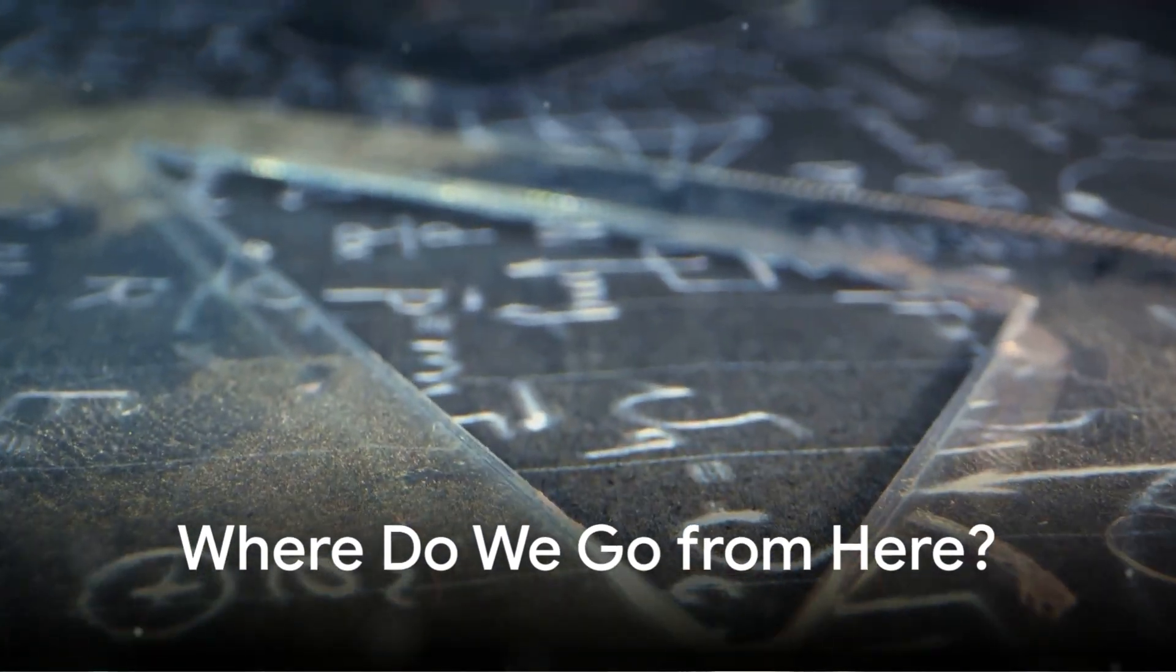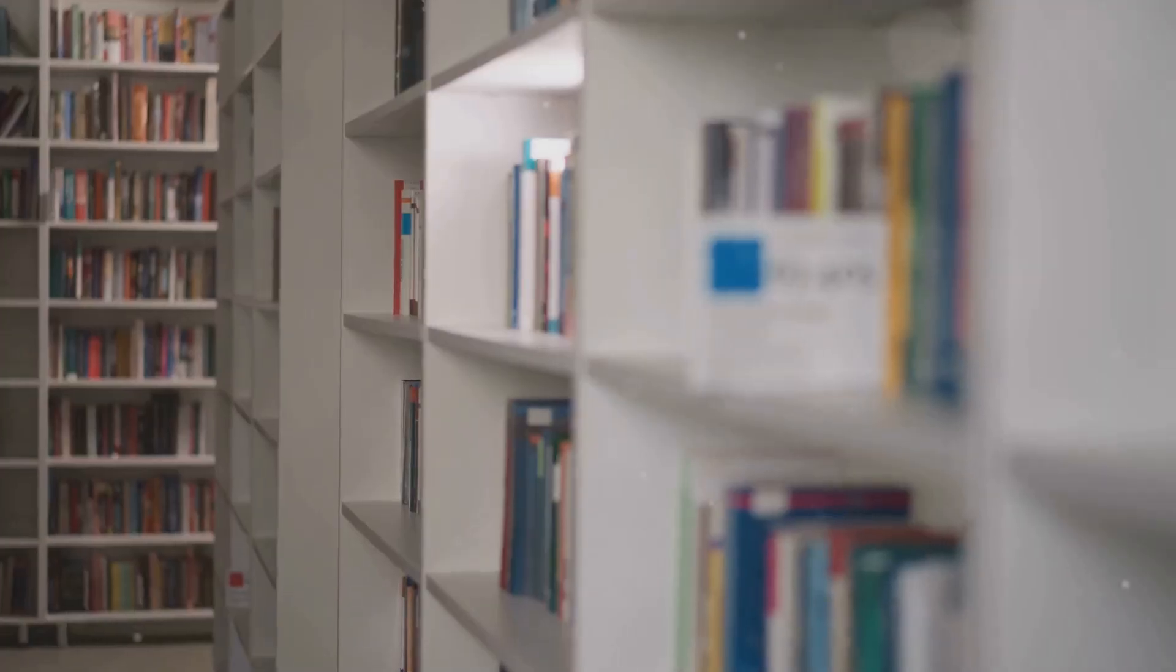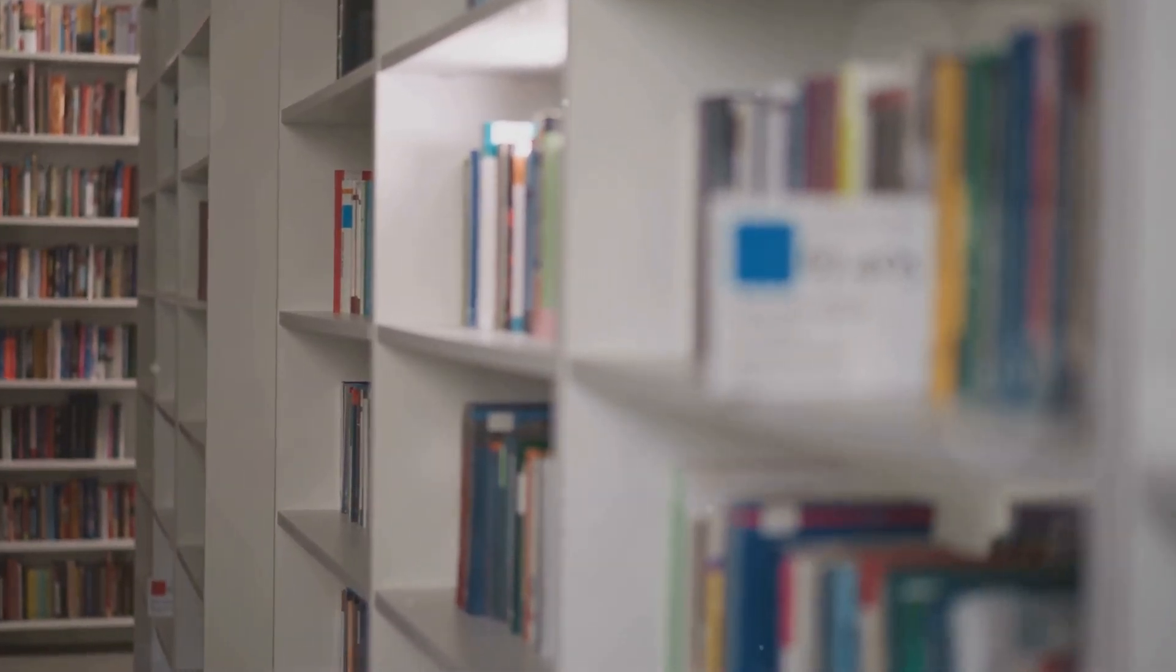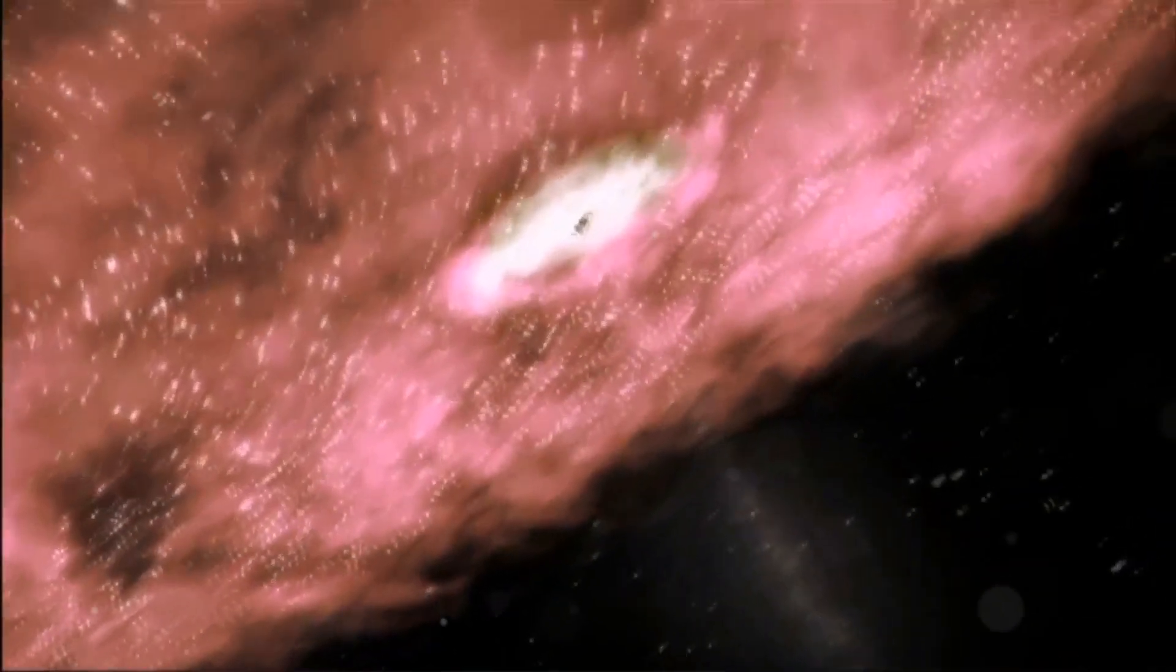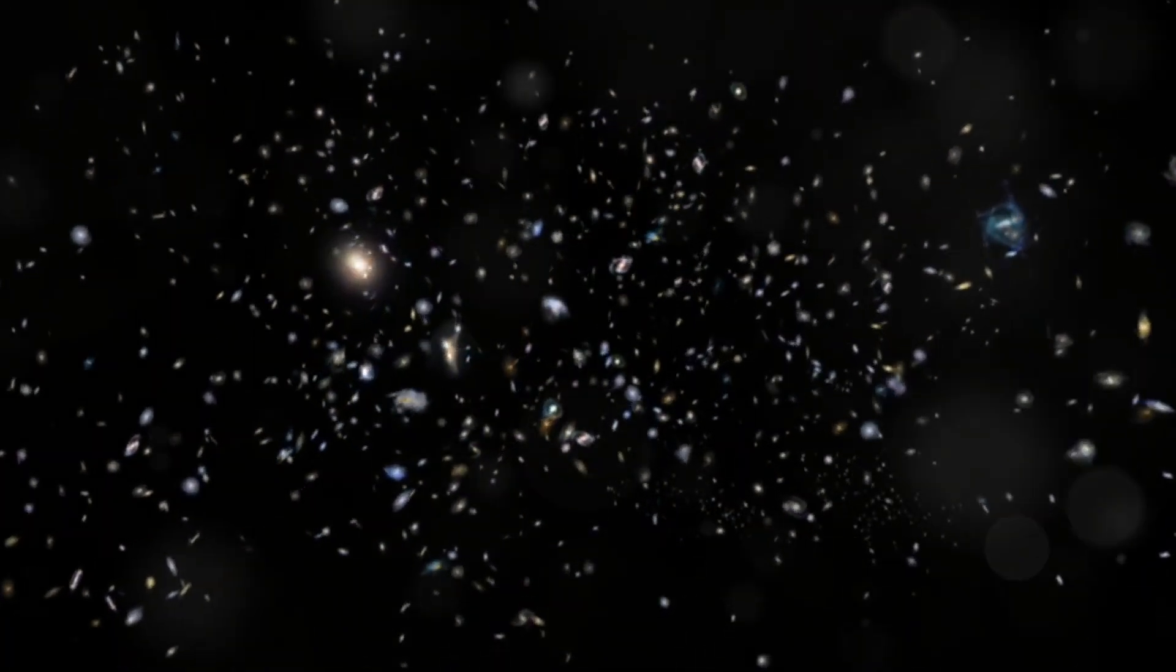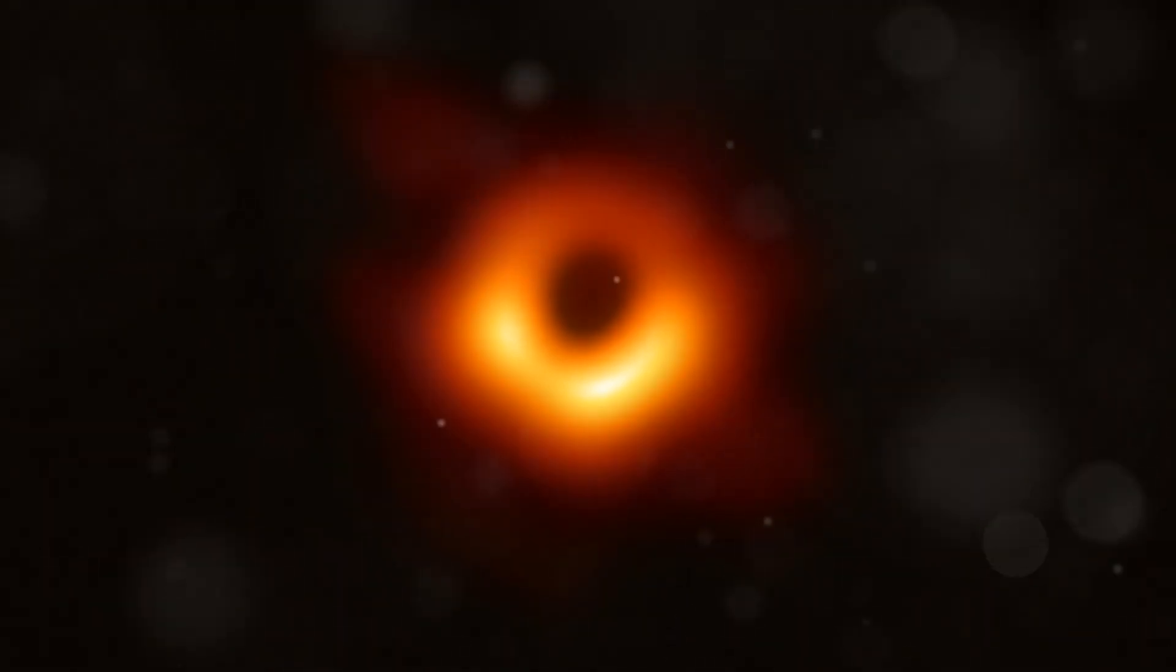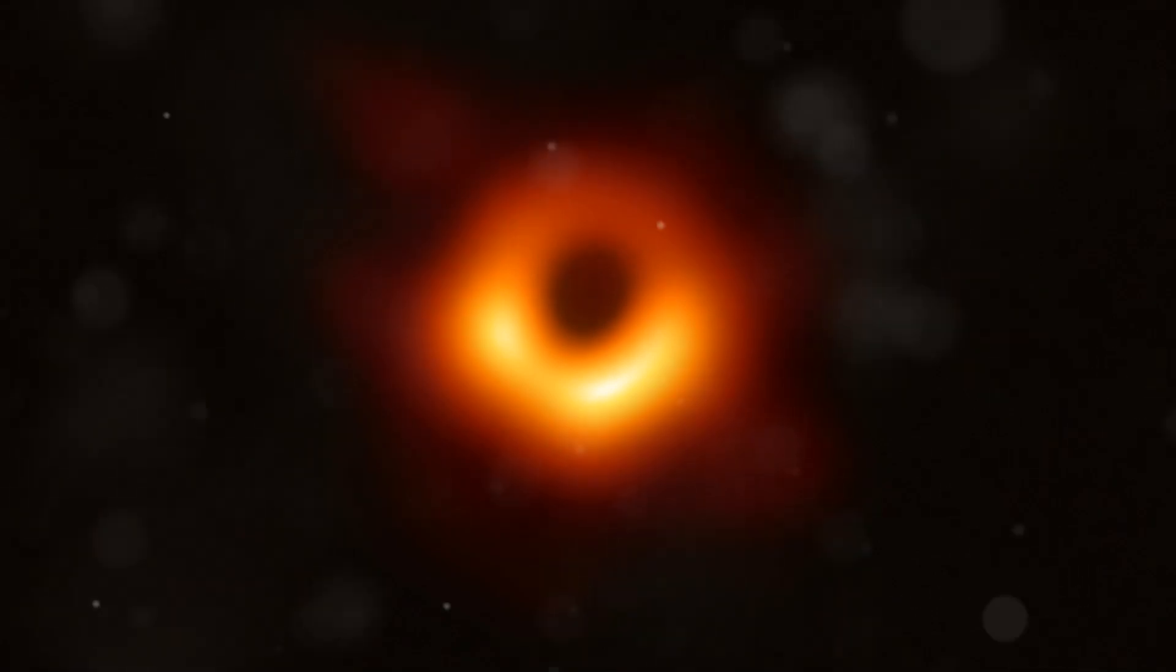The black hole information paradox, once a niche topic debated by theoretical physicists, has captured the imagination of a wider audience, sparking countless articles, books, and even science fiction stories. But where does the quest to solve this paradox go from here? One promising avenue of research involves using astronomical observations to test the predictions of different theories about black holes. As our telescopes become more powerful, we can study black holes in greater detail, looking for subtle signatures that could distinguish between competing models.